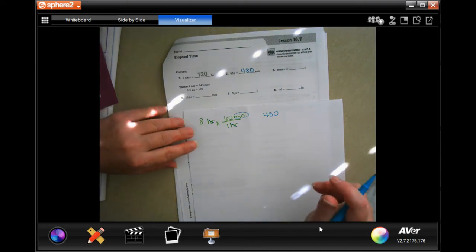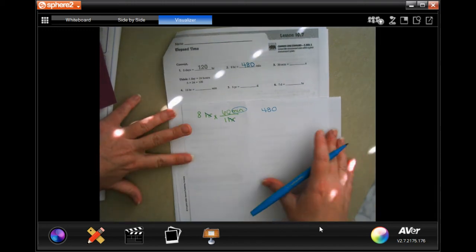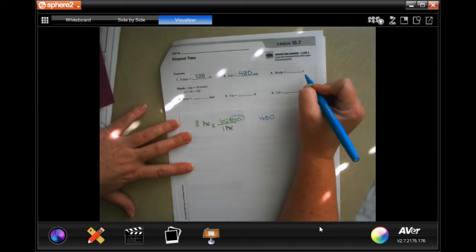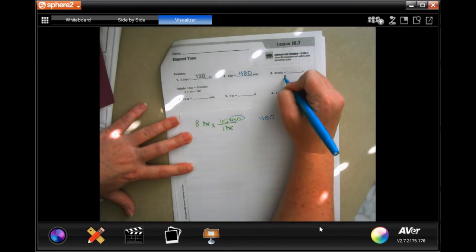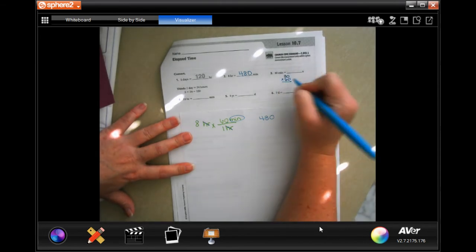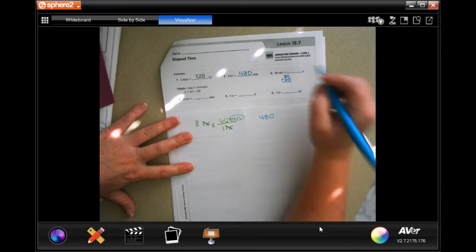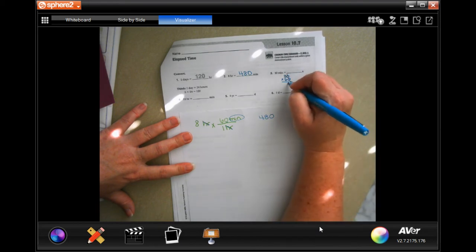30 minutes is how many seconds? Well, 30 and each minute is 60 seconds. I'm going to take those two zeros, put them at the end, and 6 times 3 is 18 - 1800 seconds.